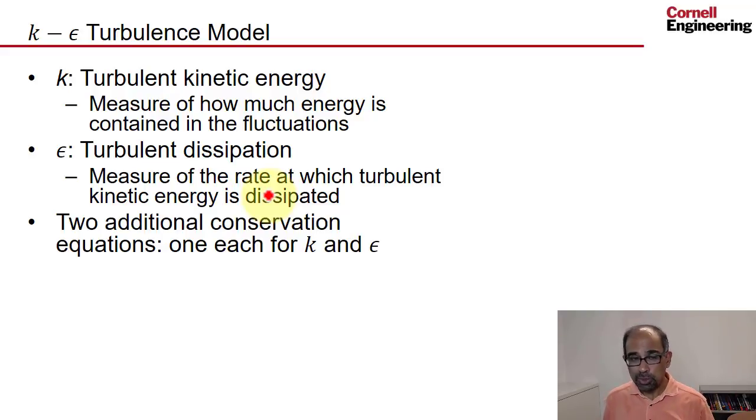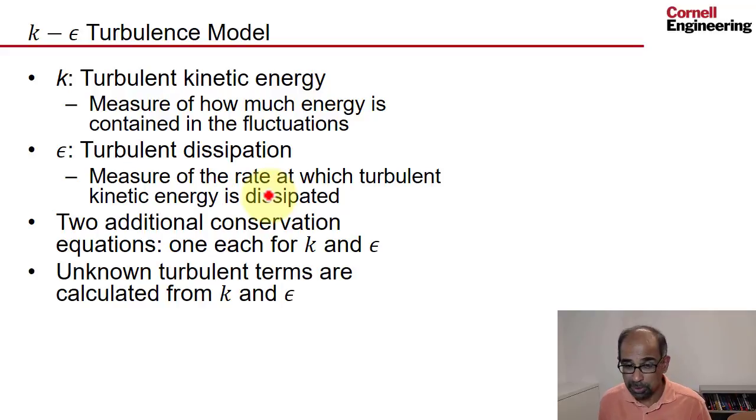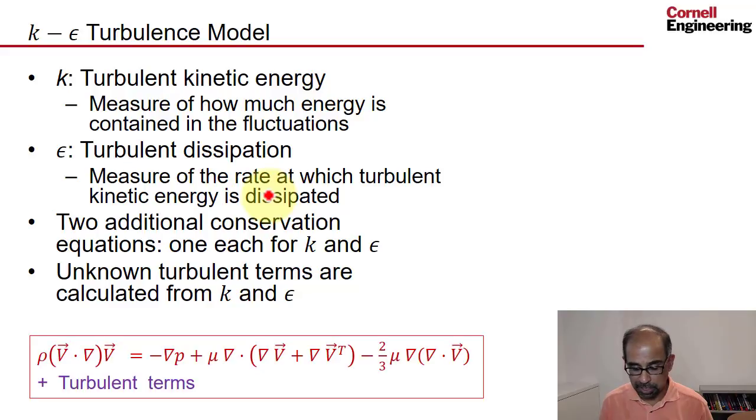We need to solve two additional conservation equations, one each for k and epsilon. Each of these are differential equations that looks similar to say the momentum equation. And then the unknown turbulent terms in our governing equations are calculated from k and epsilon. So for instance, if you have the momentum equation with the over bars, then the turbulent terms you calculate from k and epsilon.